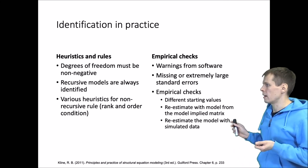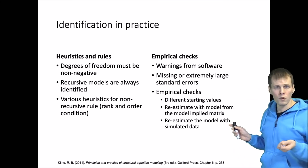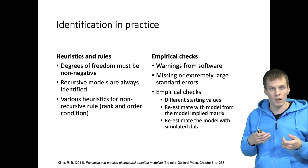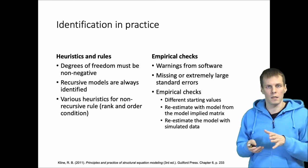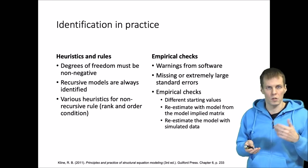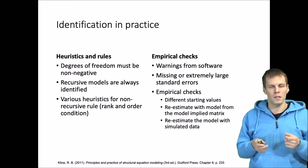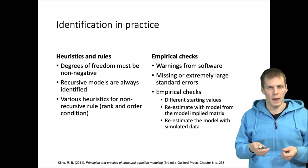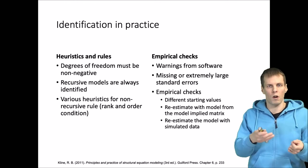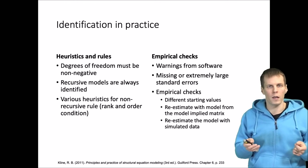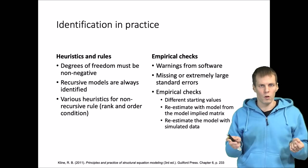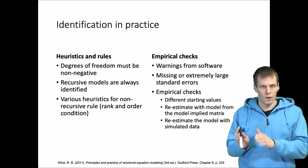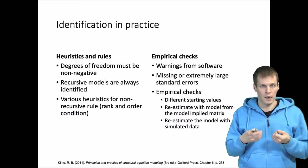You can try estimating the model with different starting values. The estimation of these models is an iterative procedure: the computer guesses some starting values, typically using some instrumental variable technique, and then optimizes to make the model fit better. If two different starting values lead to two different solutions for the model parameters, then the model is not identified — at least in this class of models.